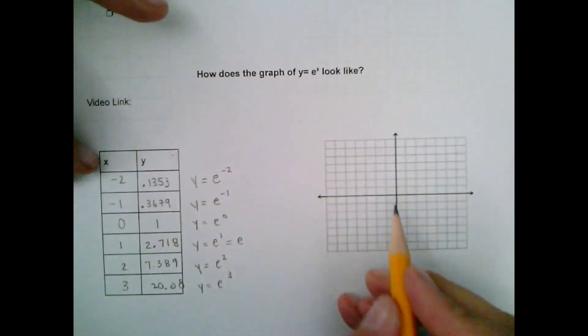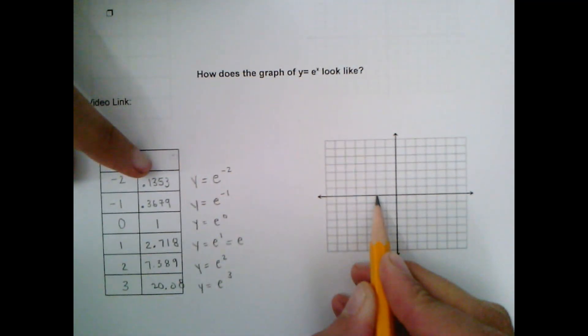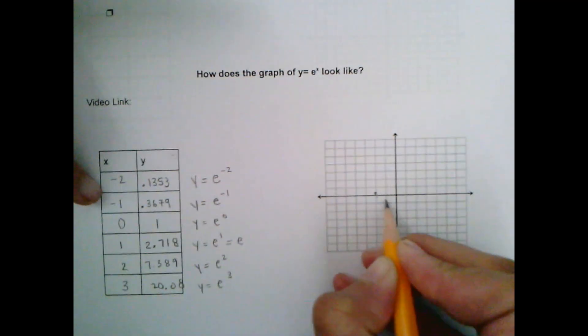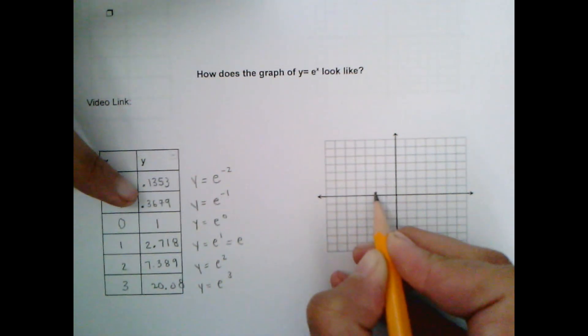Alright so at negative 2 when x equals negative 2 my y is 0.1353 so that is a very small number. It's less than 0.5 so it's less than halfway up here so I'm just going to go ahead and put a dot very very close to the x-axis. Alright when x equals negative 1 it's 0.3679. Again this is a small number it's less than halfway up here but it's also a little more than this point so I'm going to go ahead and draw my next point close to that other point in distance but not as much as 0.5.